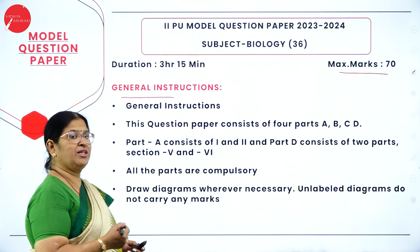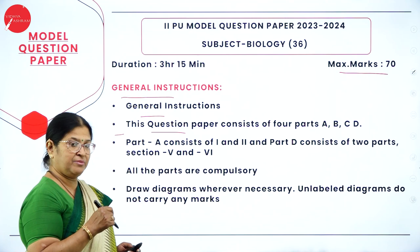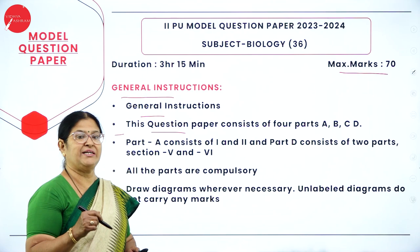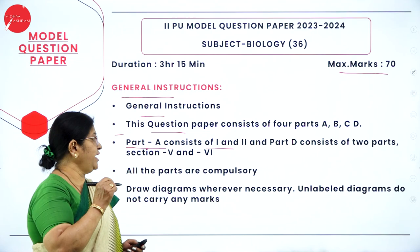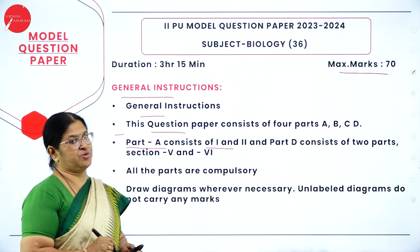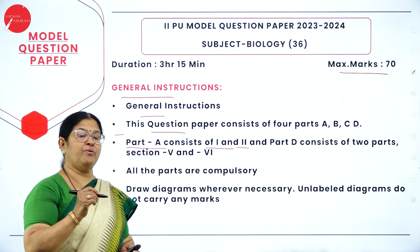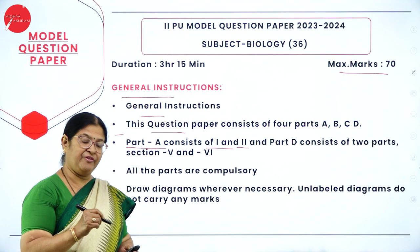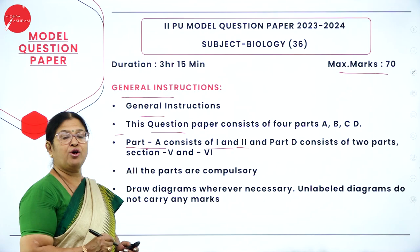The general instructions: the question paper consists of four parts — A, B, C and D. From last year there is a different pattern with MCQs. Part A consists of two sections: the first main has multiple choice questions and the second main has fill in the blanks. Part A includes 15 MCQs and 5 fill-in-the-blanks, totalling 20 marks. Part A is a very important compulsory section.